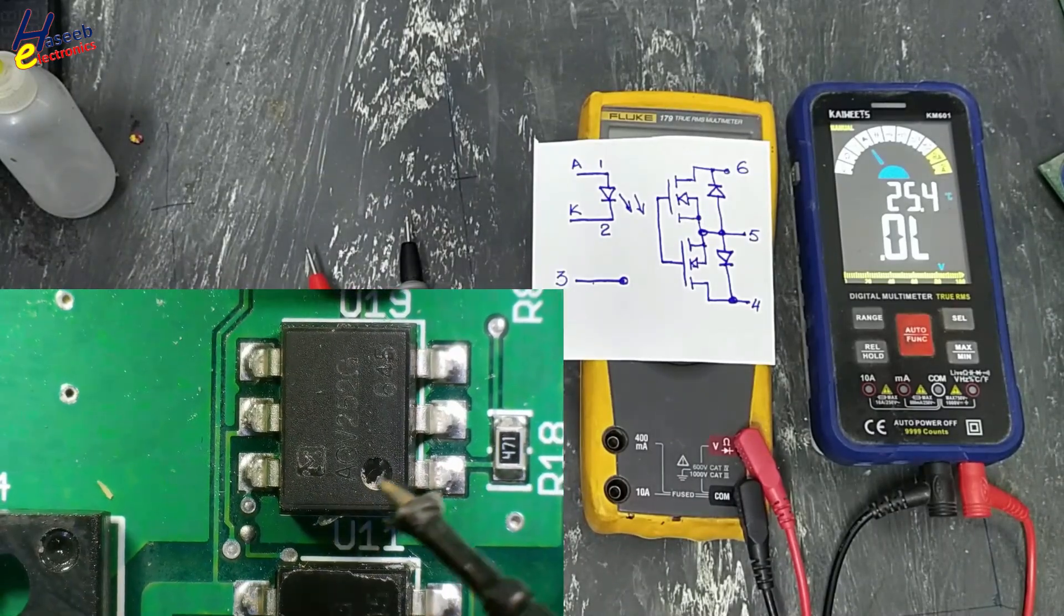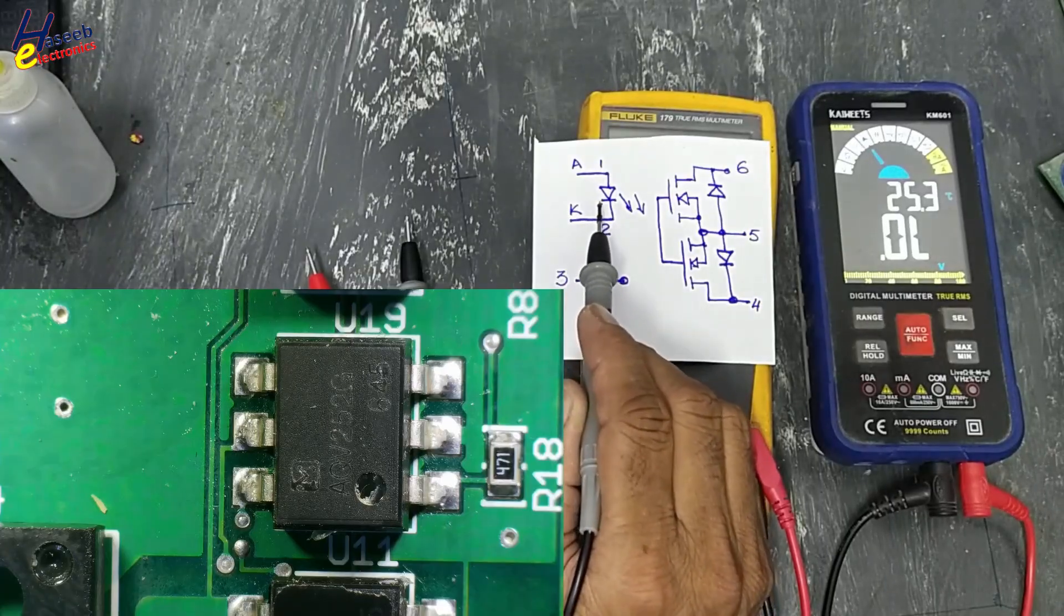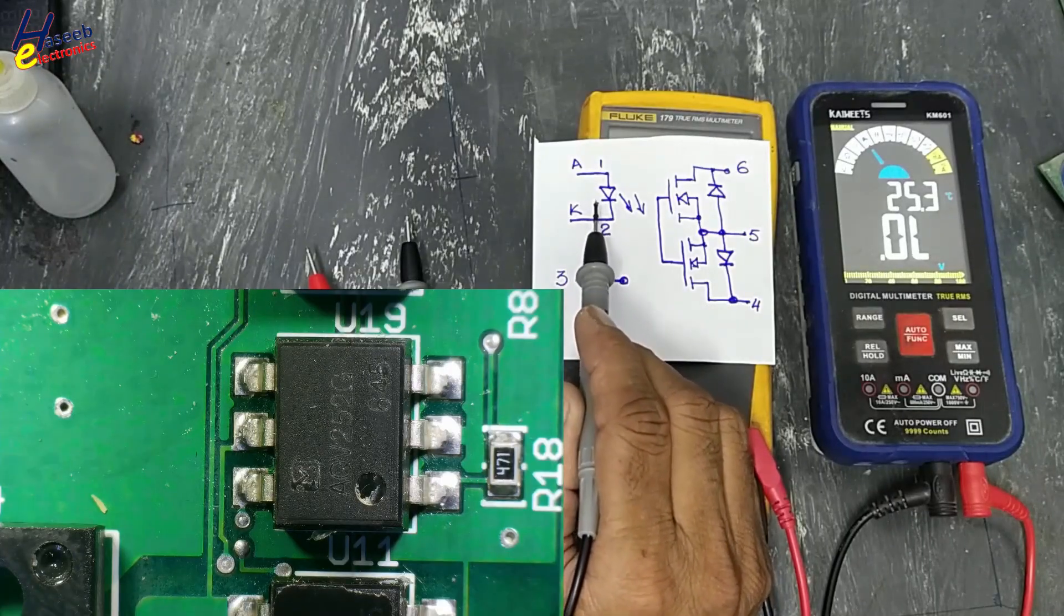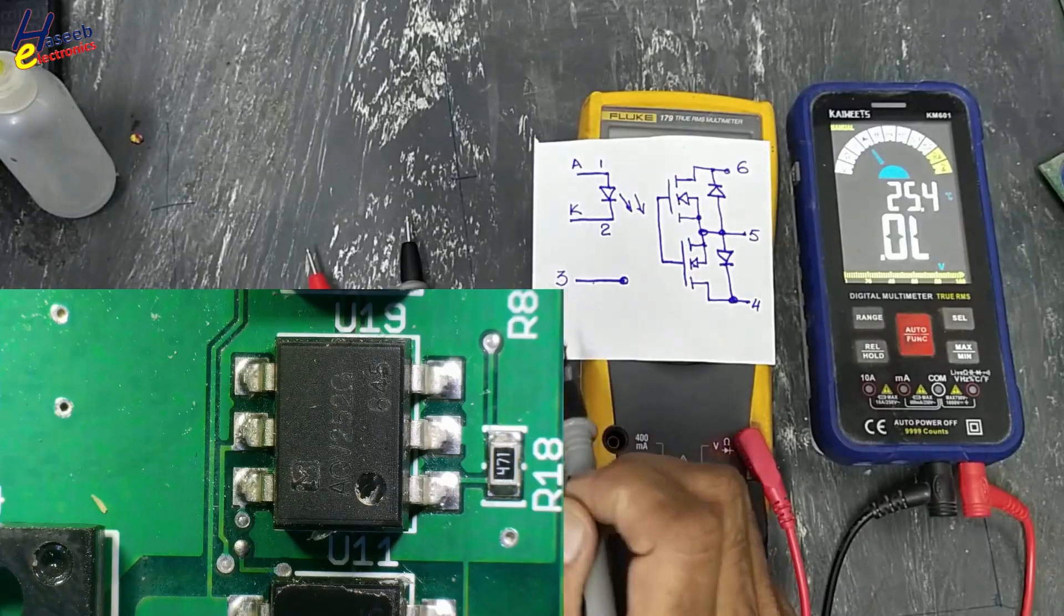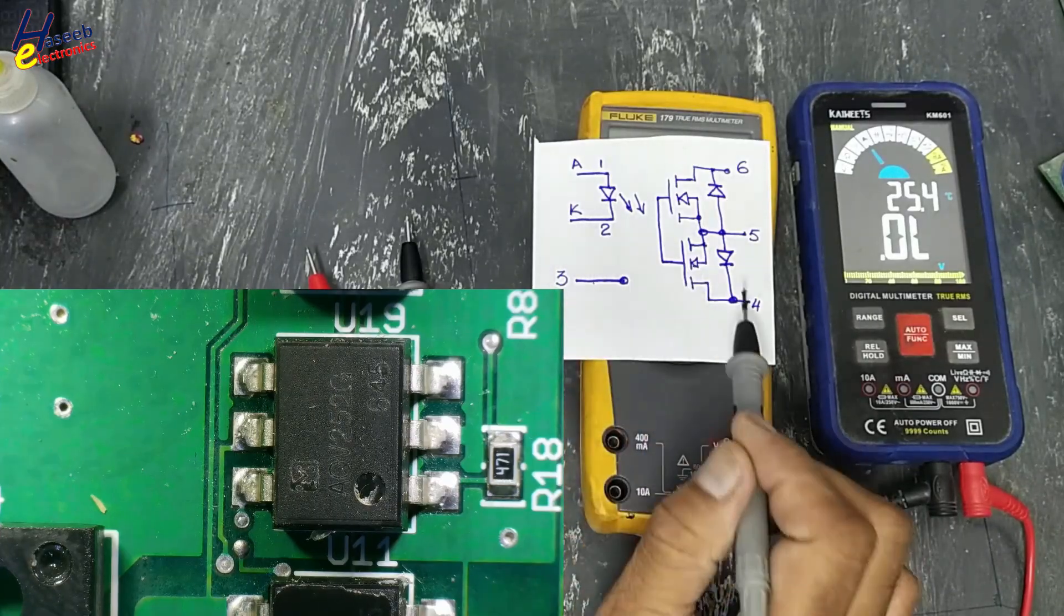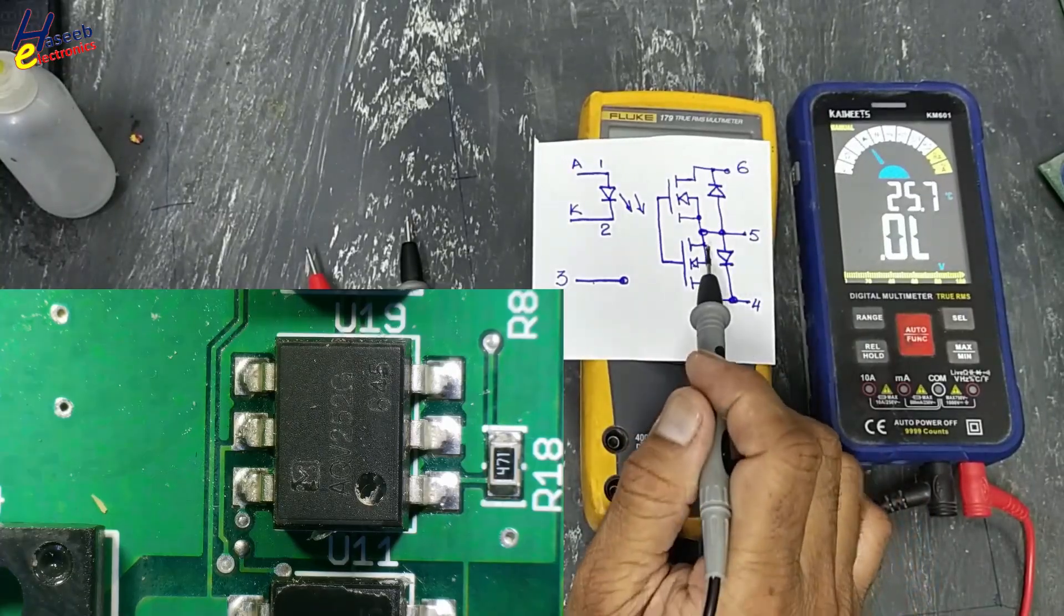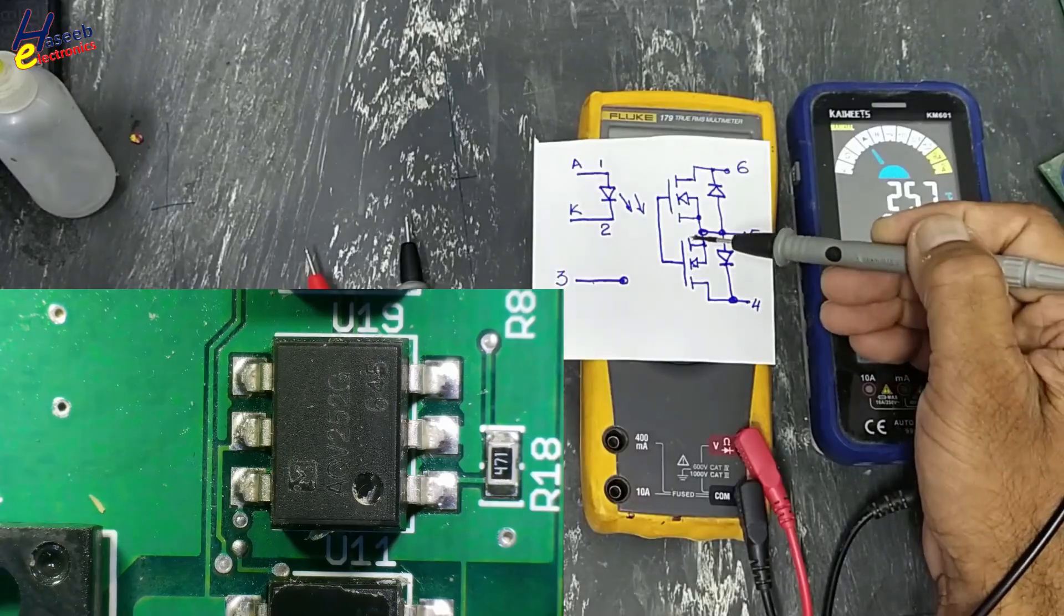AQV252G is a photovoltaic relay with an LED at the input side, consisting of an IRED or light emitting diode. Pin number one is the anode, pin number two is the cathode, pin number three is not connected. Pins four, five, and six are output points, with pin number five being the common source.